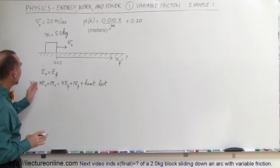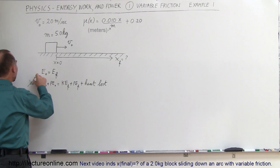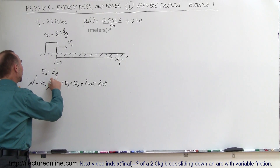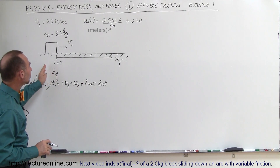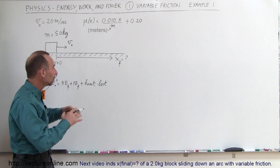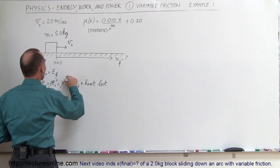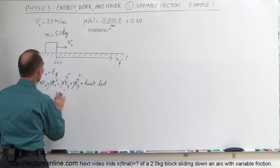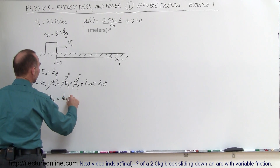Initially there's no work input to the system, so we can ignore that. It does have initial kinetic energy because it's moving at 20 meters per second, and no initial potential energy because it's at ground level. At the very end it will have no kinetic energy because it will have come to a complete halt, and no final potential energy. So essentially the equation becomes: initial kinetic energy equals the heat lost to overcome friction.